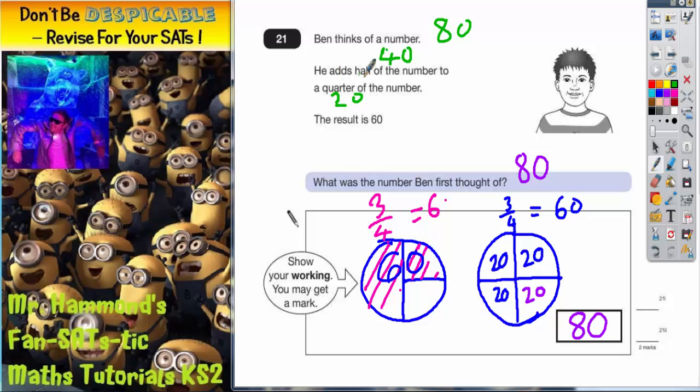So if he adds half of it, 40, to a quarter of it, which is 20, 40 and 20 is 60, which is what it says here—the result is 60. So the number he first thought of must have been 80. That is correct. Thank you.